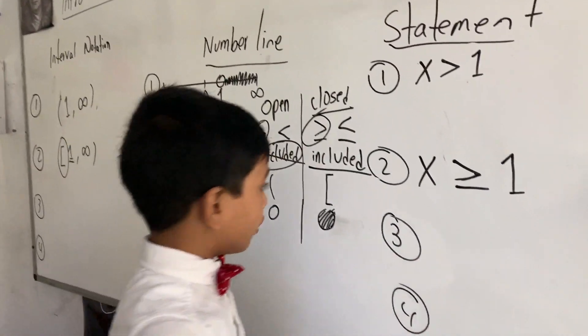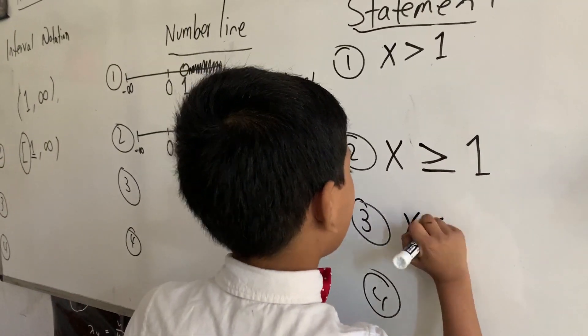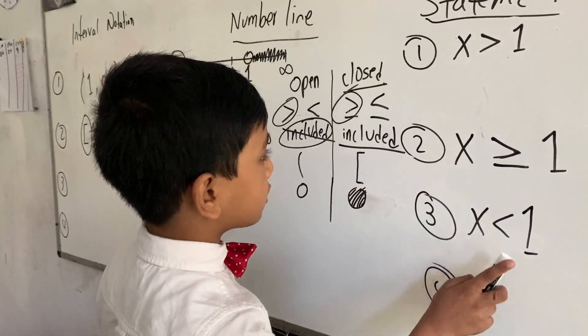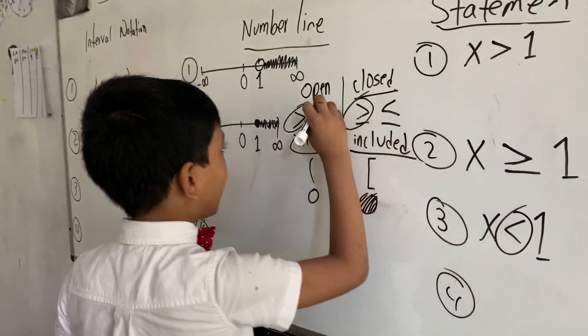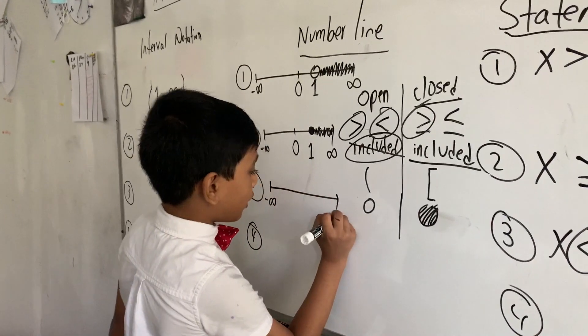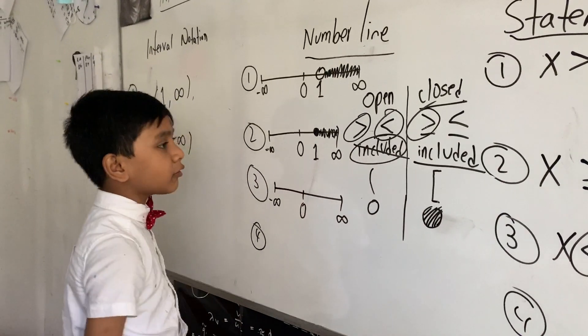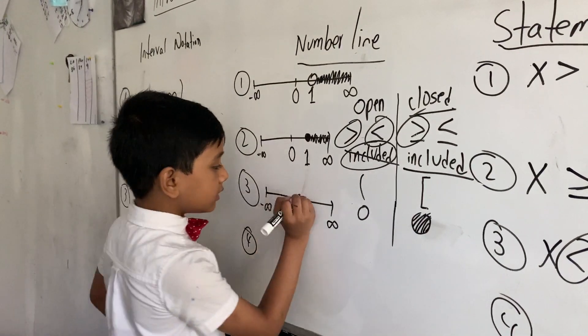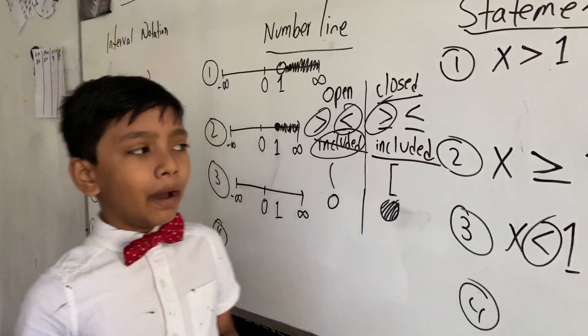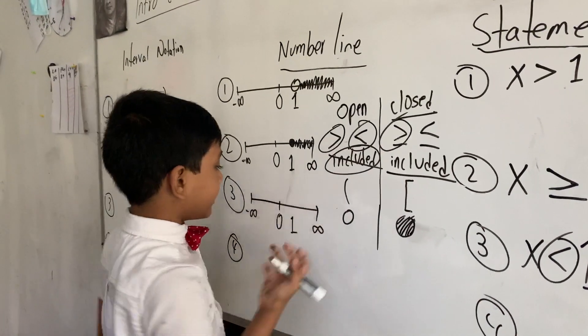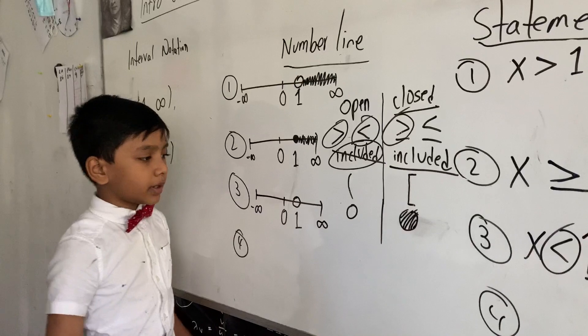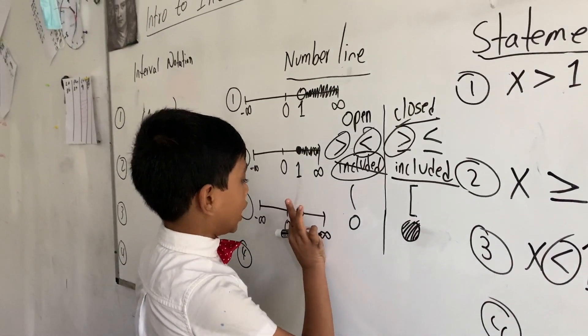Anyways, now we're going to move on to our third statement: x is less than 1. So now, since this is not a closed circle one, this is an open circle one, you can see this matches with this. So let's draw our number line again, negative infinity, positive infinity, and there's a 0 in the middle. So now let's draw our 1, and our 1 is an open circle. It's not included in the group that is less than 1. So we're going to put an open circle on it. You can also erase the line inside if you want.